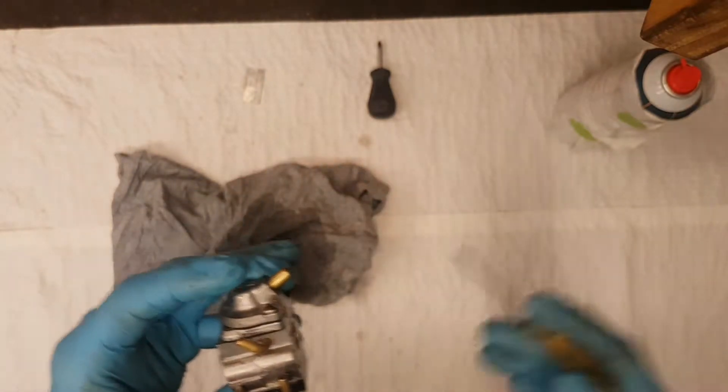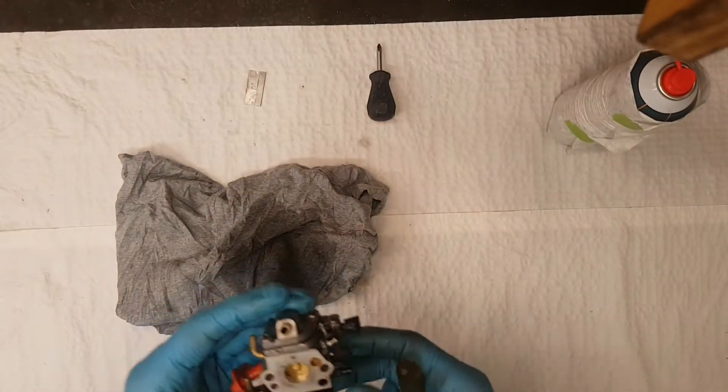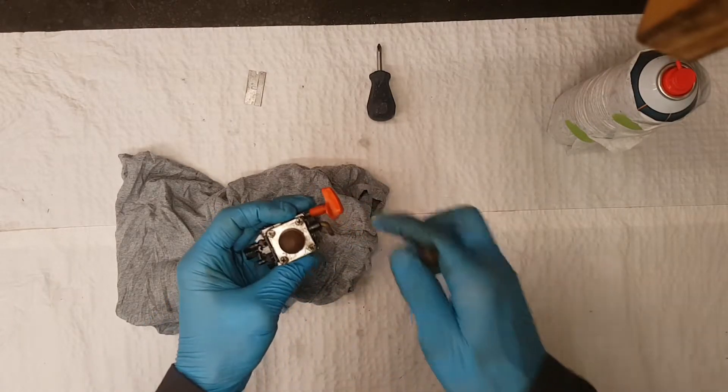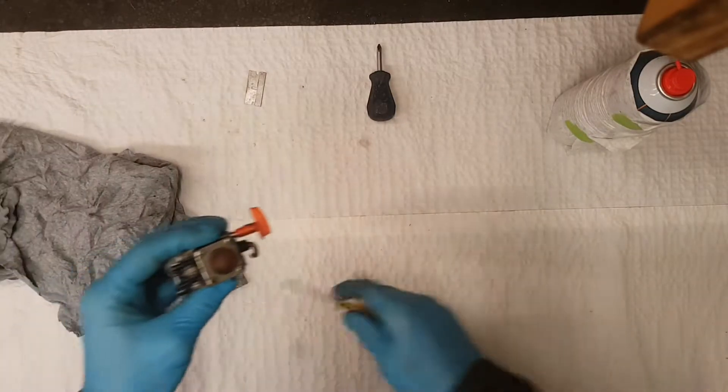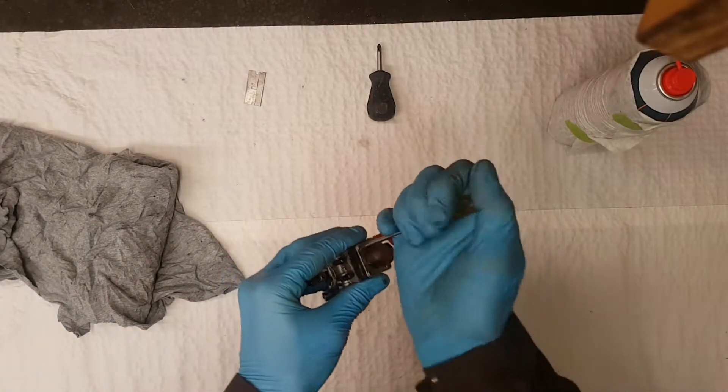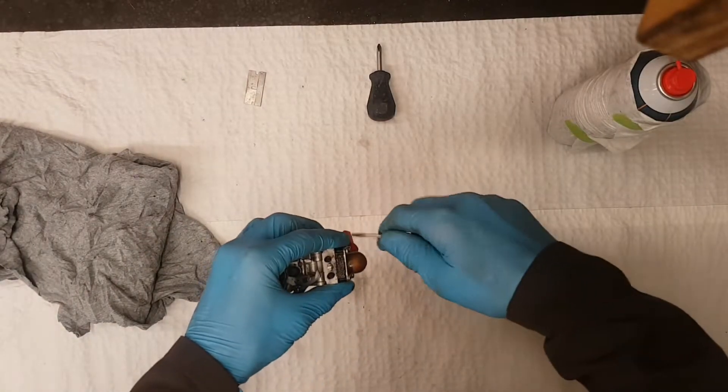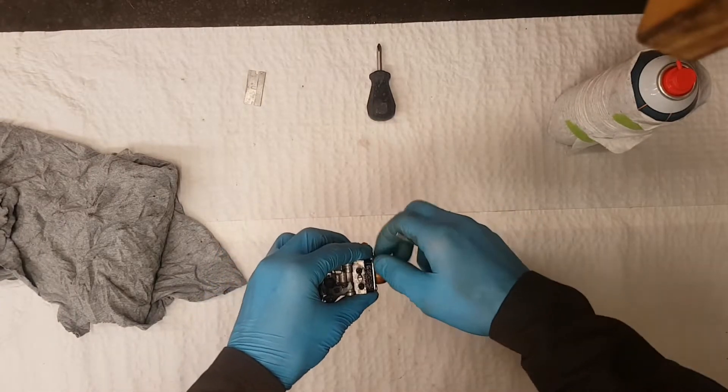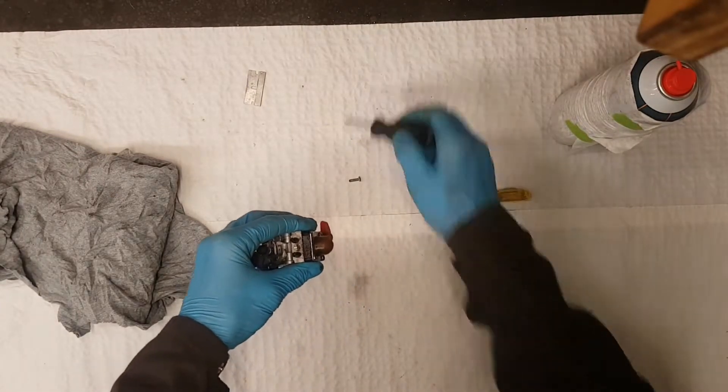What I like to do is start off by removing the primer bulb. You're just going to crack these loose and just pull them off.